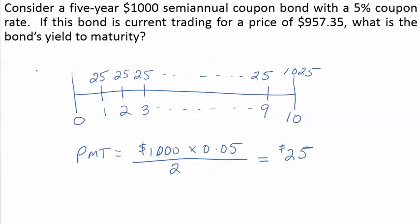We are given the price, which is the present value of $957.35. We need to find out what the yield to maturity is.